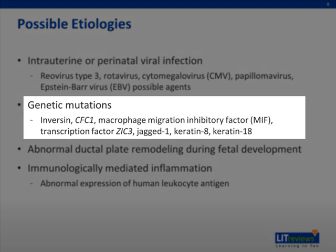Though the disease is not an inherited disorder, several genetic mutations have been identified as possible etiologies. Transgenic mice with a recessive deletion of the inversin gene have situs inversus and an interrupted extrahepatic biliary tree. Mutations of the CFC1 gene, which is involved in left-right axis determination in humans, have recently been identified in a few patients with syndromic biliary atresia. Other genes having a possible role include macrophage migration inhibitory factor, transcription factor ZIC3, jagged 1, keratin 8, and keratin 18.